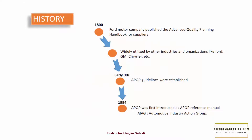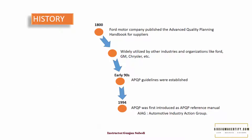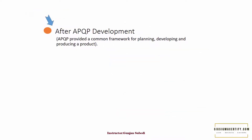If we talk about the history, first, the Ford Motor Company published the Advanced Quality Planning Handbook for Suppliers in the early 1980s. After that, the concept of APQP was widely utilized by other industries and organizations like Ford and GM. To ensure that APQP protocols were followed in a standardized format, the APQP guidelines were established in the early 90s. APQP was first introduced in 1994 by AIAG as the APQP Reference Manual — the full form of AIAG is Automotive Industry Action Group. Before the development of APQP, automotive manufacturing planning was different for each industry and location, which sometimes created confusion among internal customers and processes. APQP provided a common framework for planning, developing, and producing a product.